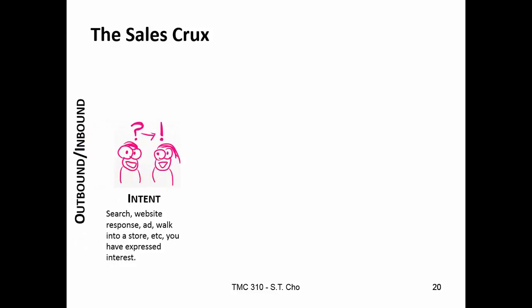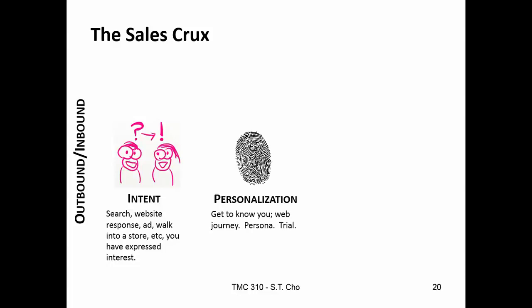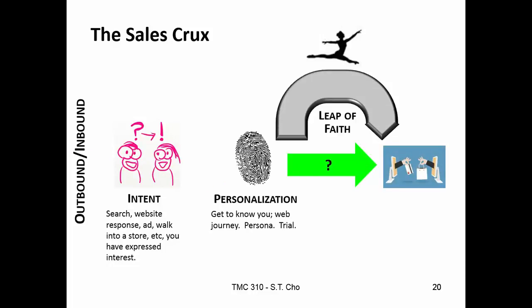In terms of sales, there's inbound marketing and outbound marketing. Outbound marketing is where I go out and talk to you — start knocking on doors or whatever. Inbound marketing is where you come to me. This is why search engine is so powerful: because you're coming to me, you're showing intent, and intent is a very large part of it. Personalization is also a big part, especially today in digital marketing — they get to know you. Once I get to know you and talk to you, there's a leap of faith: how do I get you to pull out that credit card?